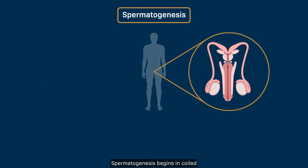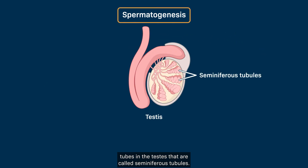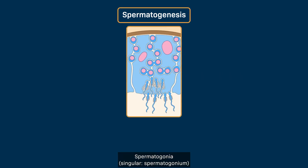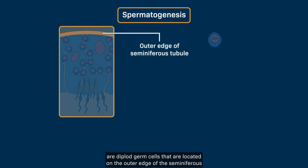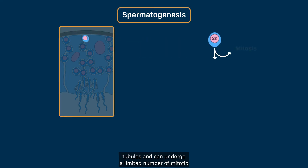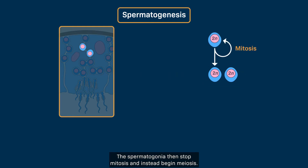Spermatogenesis begins in coiled tubes in the testes called seminiferous tubules. Spermatogonia, singular spermatogonium, are diploid germ cells located on the outer edge of the seminiferous tubule and can undergo a limited number of mitotic divisions to produce more diploid spermatogonia. The spermatogonia then stop mitosis and instead begin meiosis.